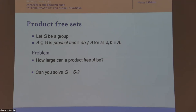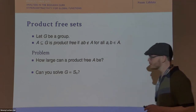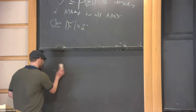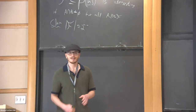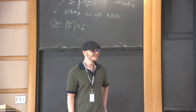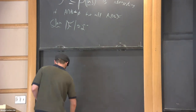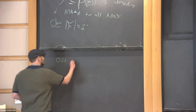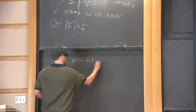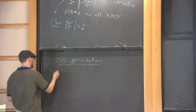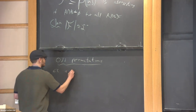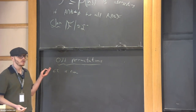As a warm-up, let's solve the problem when the group is the symmetric group. If you take the odd permutations: if σ is odd and τ is odd, then στ is even. So the odd permutations form a product-free set.